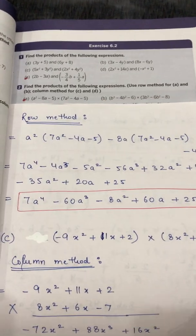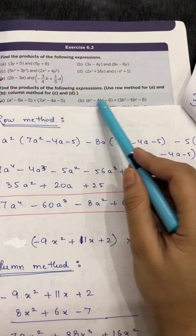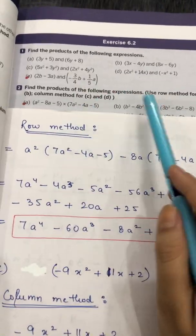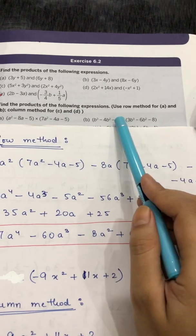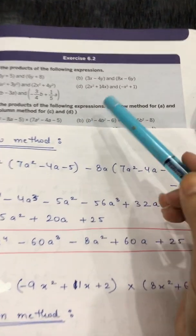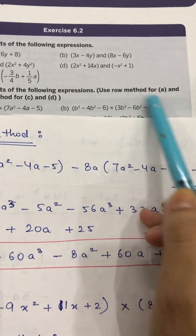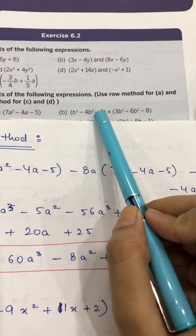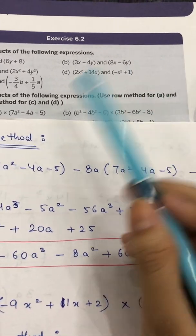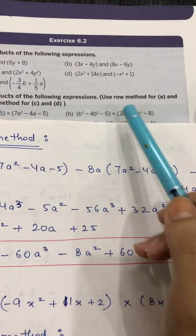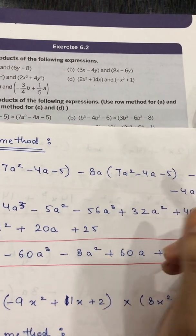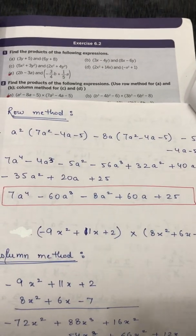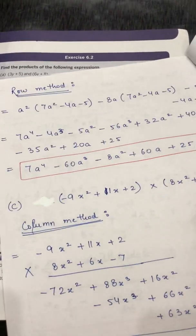Part B you have to try on your own — it follows the same row method as part A. Multiply b³ with the expression, then −4b² with the expression, then −6 with the expression. After that, solve the terms with the same power and write down the answer.